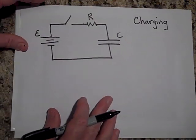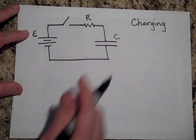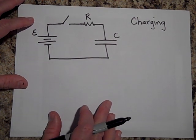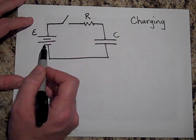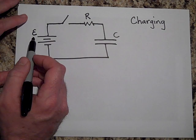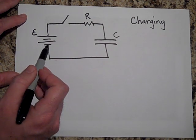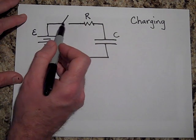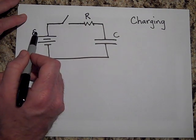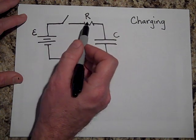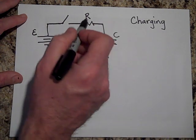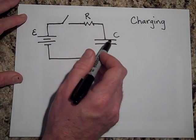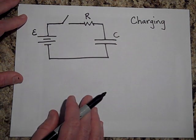Now, how about charging a capacitor? Here's a capacitor that's originally uncharged. If it's uncharged, then at T equals zero when the switch is open, the voltage across the battery is E — the EMF. So I go up E and I have to come down E across the switch. If this is three volts, this is three volts, because there's no voltage across the resistor — no current — and no voltage across the capacitor because it's not charged. Voltage across the resistor is I times R, and across the capacitor it's Q over C.